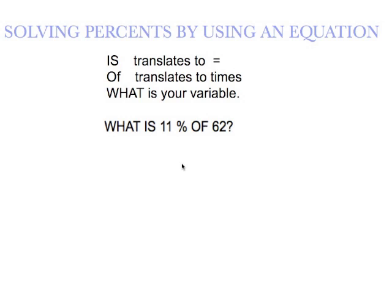So what is 11% of 62 will translate out for us as W for the what. We don't know what it is. Is is my equal. 11% needs to be written as a decimal. To change a percent to a decimal, move that decimal point two places to the left, so it is equal to 0.11. Of is multiplication 62. So all this problem is asking us to do to find W is just to multiply 0.11 times 62.